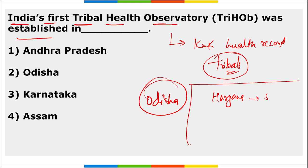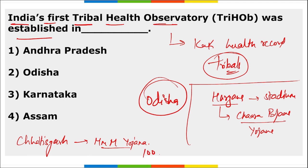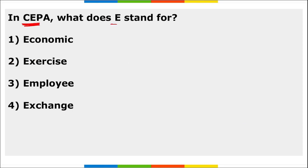Haryana government is setting up a stadium in the hometown of Neeraj Chopra, who won the gold medal in javelin throw at the Tokyo Olympics. Haryana also launched the Chara Bijai Yojana to promote fodder cultivation. Chhattisgarh launched Mukhyamantri Mitan Yojana to provide doorstep delivery of 100 public services offered by the government.